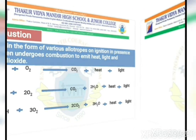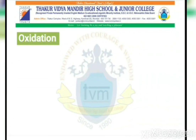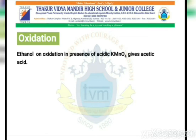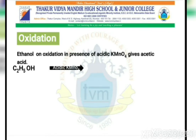The next type of reaction is oxidation. Oxidation, as we know, is addition of oxygen. We have an example of ethanol: ethanol, with formula C2H5OH, on oxidation in the presence of acidic KMnO4 — that is, potassium permanganate — gives acetic acid, CH3COOH.